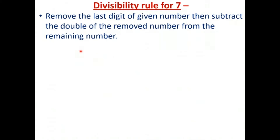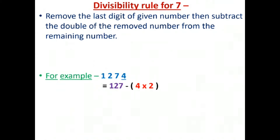Now the divisibility rule for 7. Remove the last digit of the given number, then subtract double the removed digit from the remaining number. For example, take 1274. The last digit is 4, so we double it to get 8. The remaining number is 127. We subtract 8 from 127.